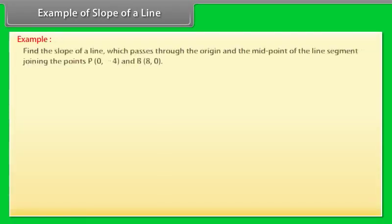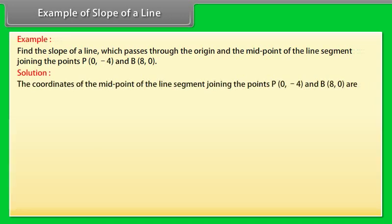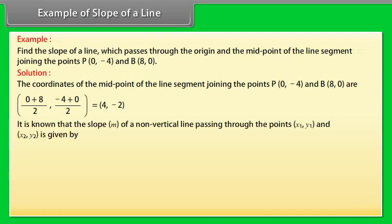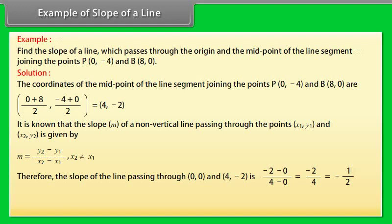Example: Find the slope of a line which passes through the origin and the midpoint of the line segment joining the points P(0, −4) and P(8, 0). Solution: The coordinates of the midpoint of the segment joining P(0, −4) and P(8, 0) are (4, −2). The slope M of a non-vertical line passing through (X1, Y1) and (X2, Y2) is M equals (Y2 minus Y1) by (X2 minus X1). Therefore, the slope of the line passing through (0, 0) and (4, −2) is (−2 minus 0) by (4 minus 0) equals minus 2 by 4 equals minus 1 by 2. Hence, the required slope is minus 1 by 2.